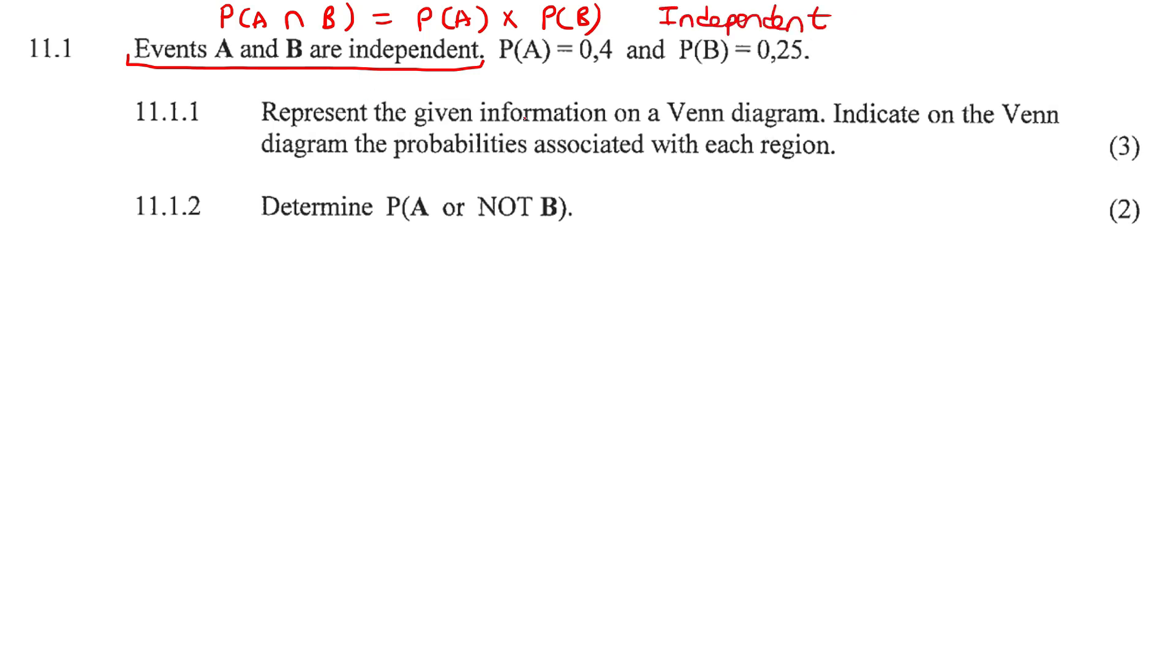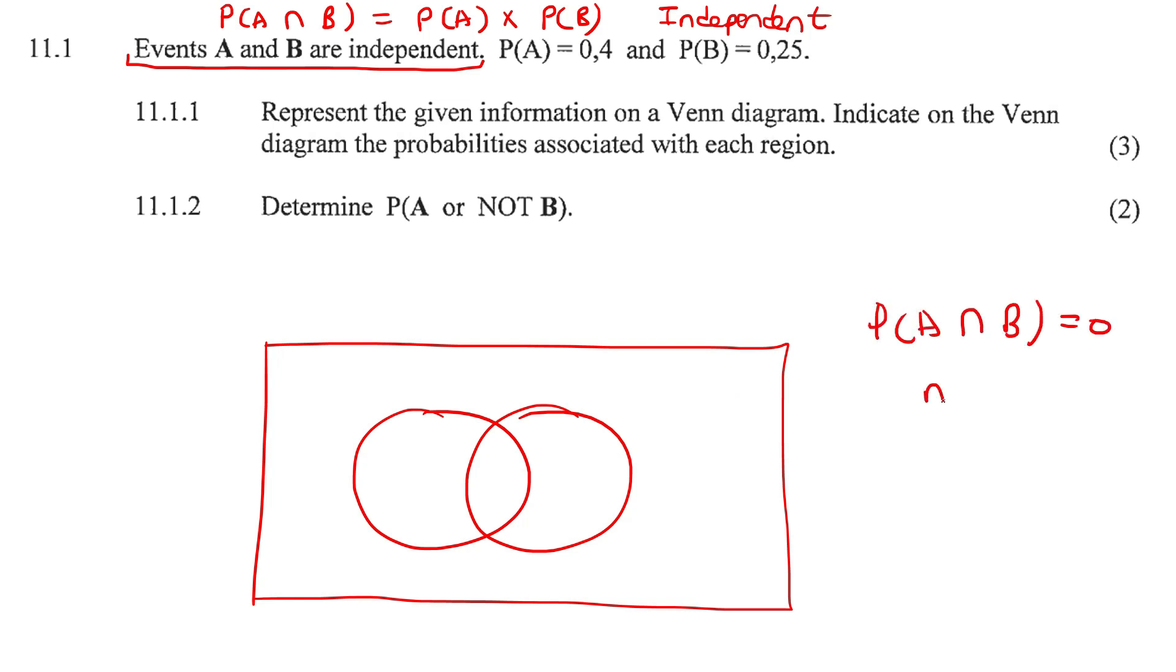So it says represent the given information on a Venn diagram, indicate the Venn diagram probabilities. So on a Venn diagram, we know that they will intersect because if we know that the probability of A and B is zero, then we call that mutually exclusive. But then on your Venn diagram, it would look like that.